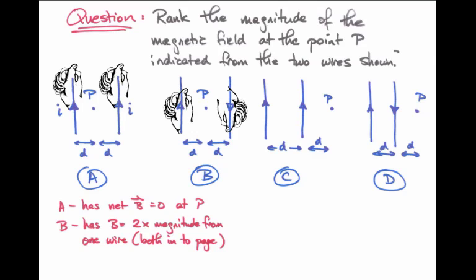we find that our fingers are curled around and point into the page for both the left wire and the right wire. And that's because the current in the right-hand wire is now pointing straight down.